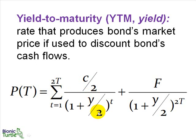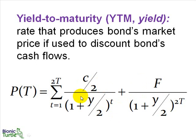We multiply t by 2 and divide y by 2 because for bonds we typically work on a semi-annual basis. The yield to maturity is the yield that, if plugged into this formula and used to discount the future cash flows, solves for a present value equal to the price of the bond — so it ends up being an internal rate of return. Now I'll show you that in Excel and then with the Texas Instruments calculator.